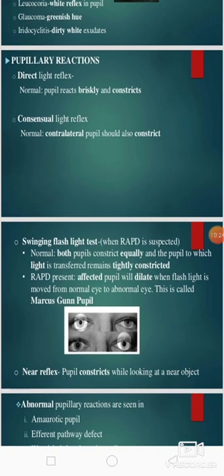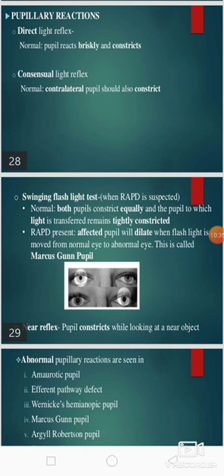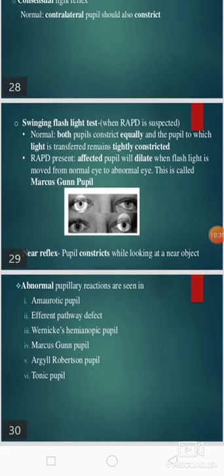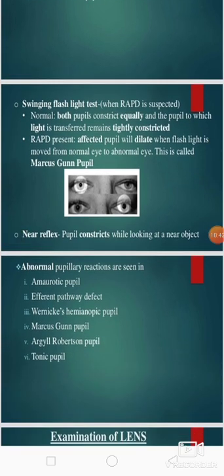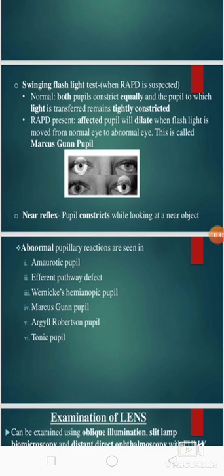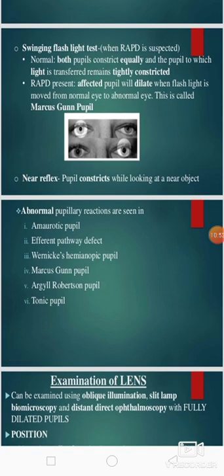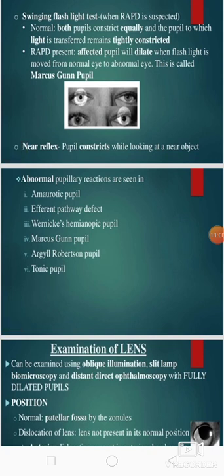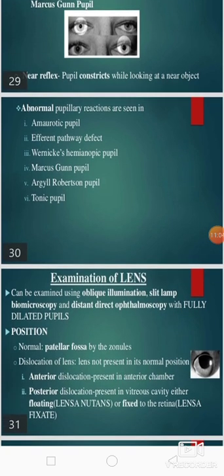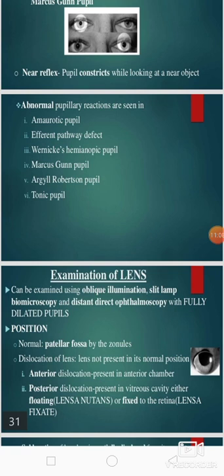Then we should see the pupil reactions — the direct light reflex and consensual light reflex. In the direct light reflex, normally the pupil reacts briskly and constricts; in the consensual light reflex, the contralateral pupil should also constrict. Then there is the swinging flashlight test: normally both pupils constrict equally and the pupil to which light is transferred remains tightly constricted. If RAPD is present, the affected pupil will dilate when the flashlight is moved from the normal eye to the abnormal eye — this is called the Marcus Gunn pupil. The near reflex: pupil constricts by looking at a near object. Abnormal pupillary reactions are seen in amaurotic pupil, efferent pathway defect, Horner's syndrome, hemianopic pupil, Marcus Gunn pupil, Argyll Robertson pupil, and tonic pupil.